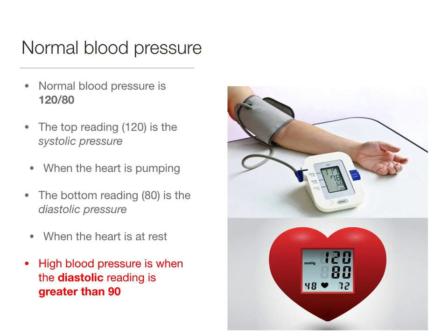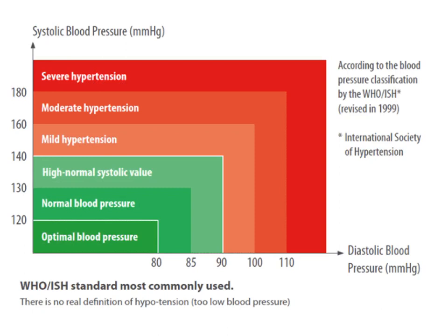High blood pressure is defined as when the diastolic rating, or when the heart is at rest, is greater than 90. This can be seen in the blood pressure chart, with systolic blood pressure going up the left-hand vertical axis and diastolic blood pressure going along the horizontal axis. As diastolic blood pressure defines hypertension, this is the most important reading. Optimal blood pressure is the intersection between 120 on the vertical axis and 80 on the horizontal axis, and as we increase the diastolic blood pressure we move from normal to mild hypertension, moderate, and finally severe.